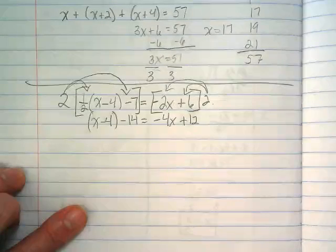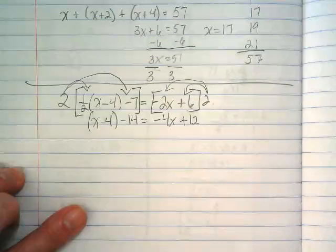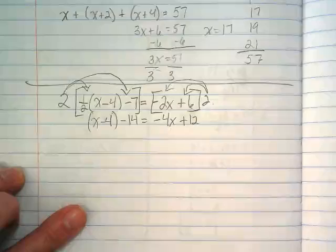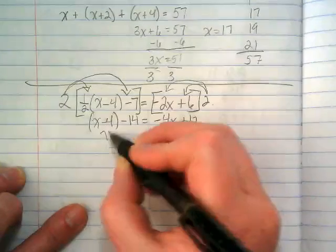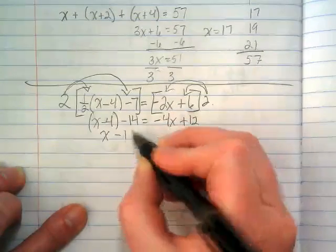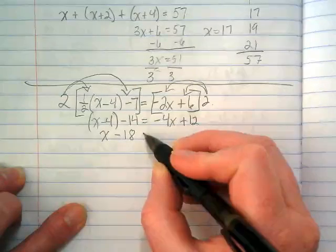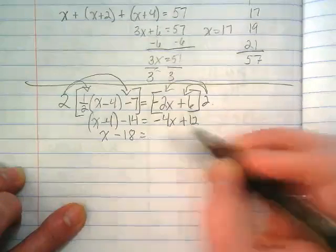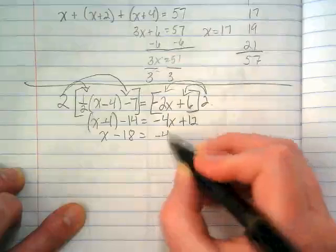What would our next move be? Combine like terms. On the left side, we're going to end up with x minus 18 is equal to negative 4x plus 12.